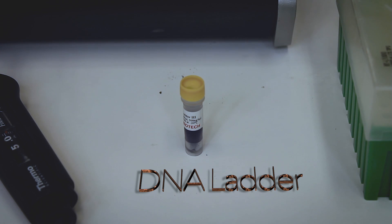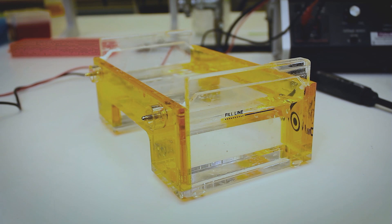The DNA ladder is used to scale the length of the DNA that was amplified. Fill the gel box up to the fill line with TBE and gently place your agarose gel into the box.